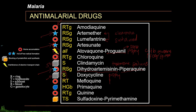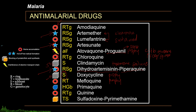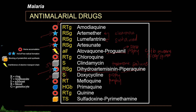Mefloquine is another drug usually used for prophylaxis. It is converted to its active metabolite and also interferes with heme detoxification. Its main action is against the larger ring stages as well as the early trophozoite stage. Compared to other antimalarial drugs, mefloquine produces relatively more side effects, primarily concerning the central nervous system and GI symptoms. It is contraindicated in patients with a history of cerebral malaria and neuropsychiatric disorders, and caution should be exercised in patients with hepatic impairment.